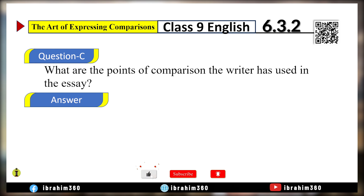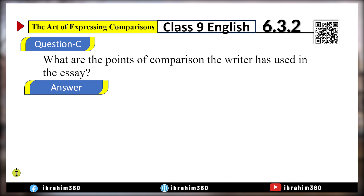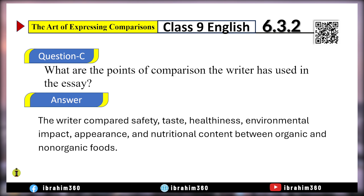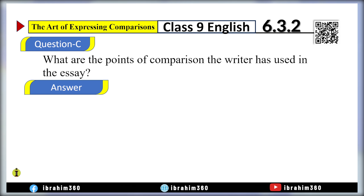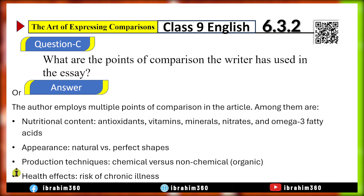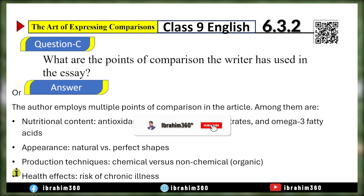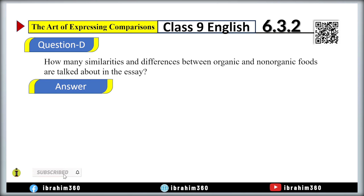What are the points of comparison the writer has used in this essay? The writer compared safety, taste, healthiness, environmental impact, and nutritional content. We can also write that the author employs multiple points of comparison in the article, among them nutritional content, differences, production techniques, and health effects.